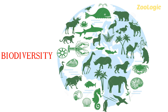Biodiversity, or biological diversity, is the variety of living organisms found on Earth. To study such varied forms of life, modern taxonomy has classified all these organisms into five groups termed as kingdoms.